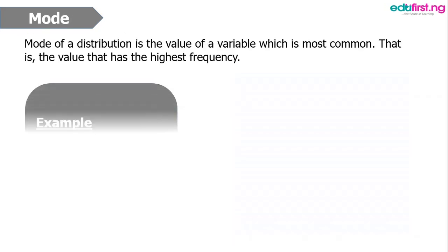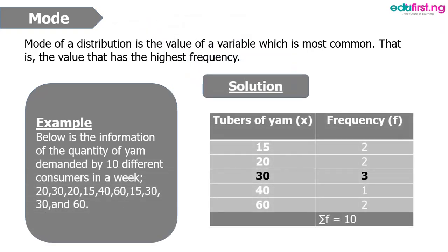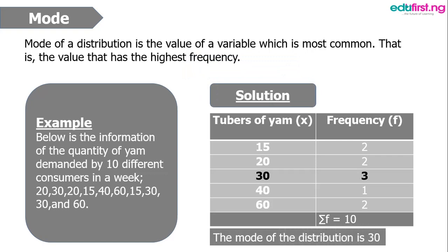The concept of mode: the mode of a distribution is the value of a variable which is most common — that is, the value that has the highest frequency, the value that appears most in a given distribution or set of numbers. For example, below is the information on the quantity of yam demanded by 10 different consumers in a week. From the values arranged in a table, you discover that 30 is the mode, as 30 appears most in the given set of numbers, thereby making 30 the mode of the distribution.